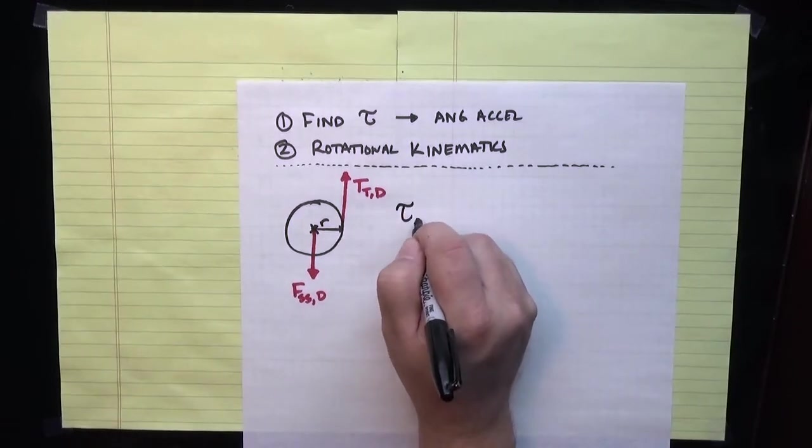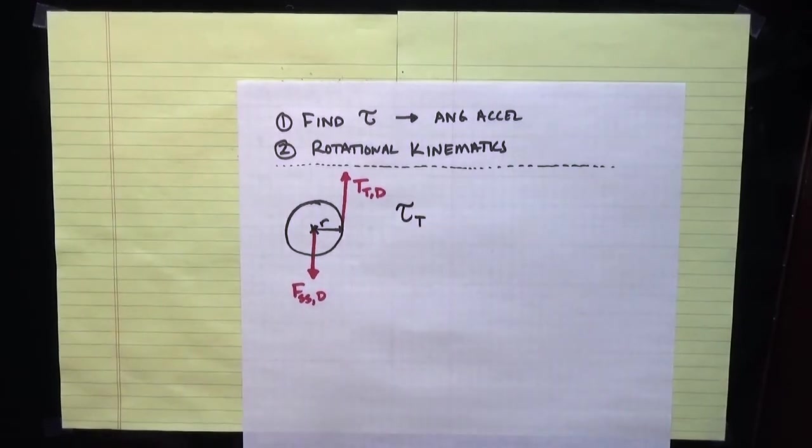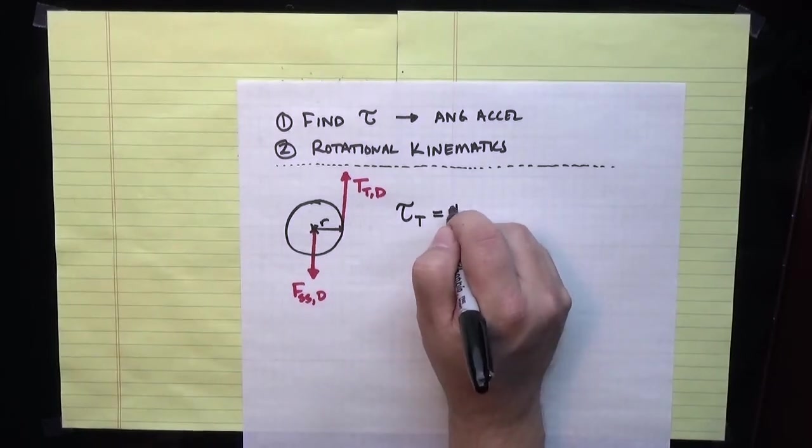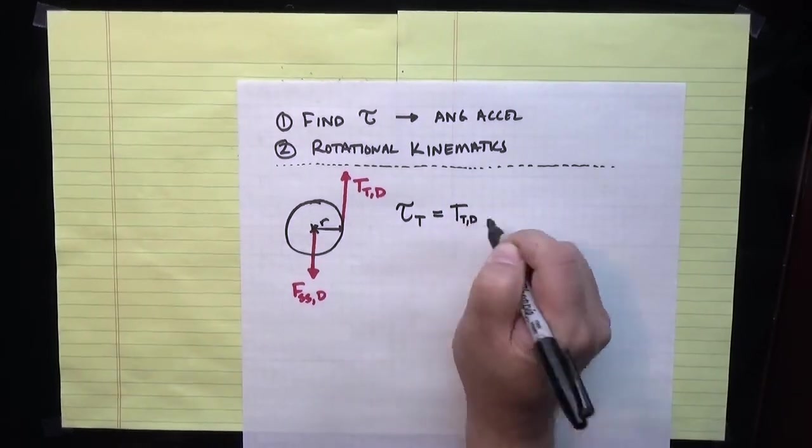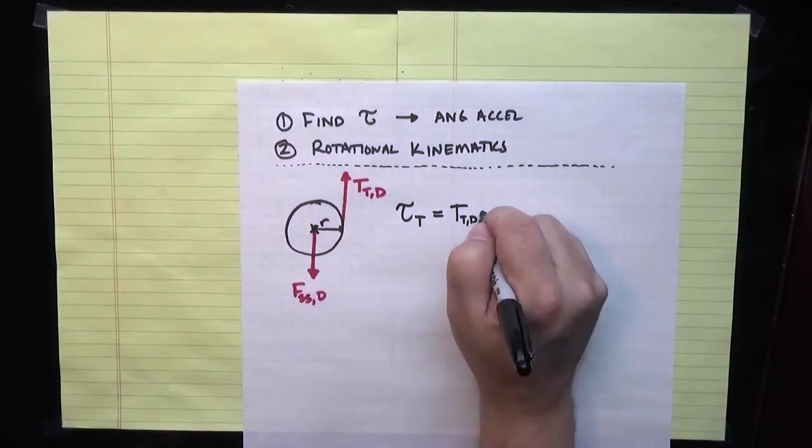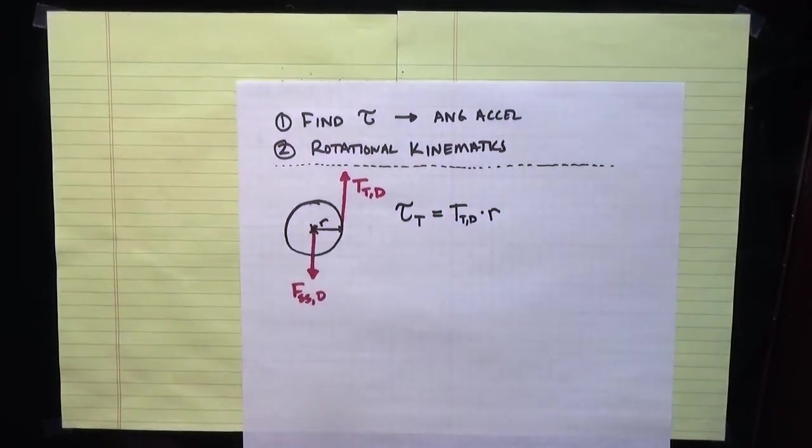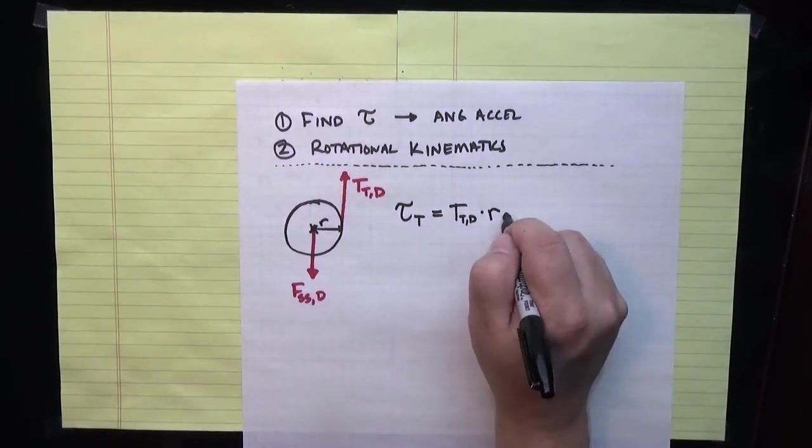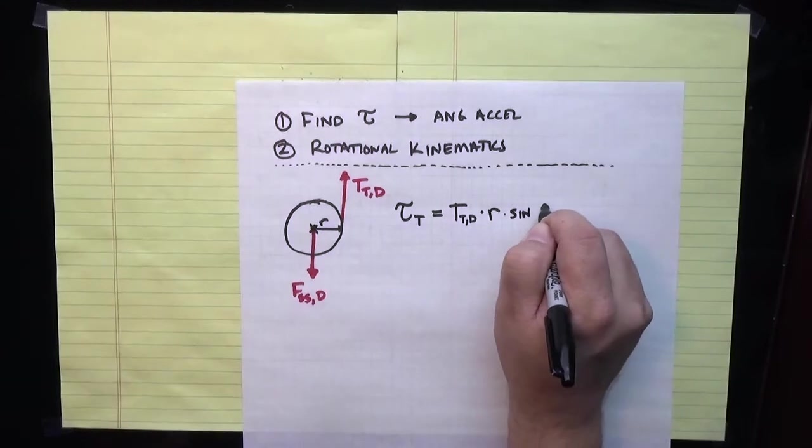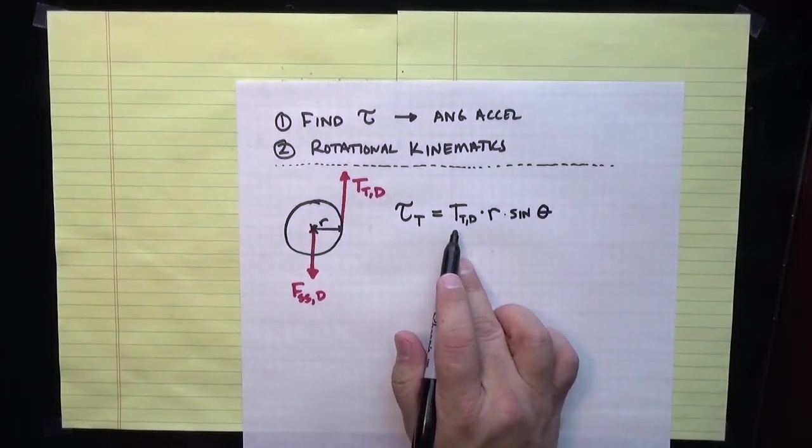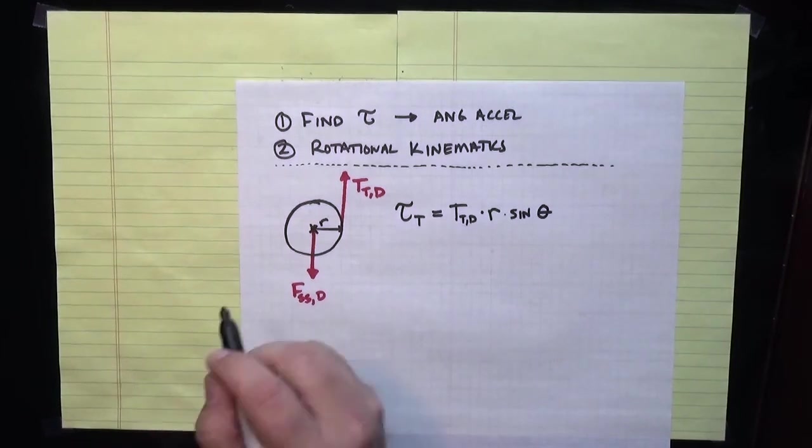The torque due to the tension in this problem is equal to the force, which is the tension of the tether on the drum, times the size of the lever arm R, which in this case will be the radius of the drum that the tether is wrapped around, times the sine of the angle between the lever arm and the force.